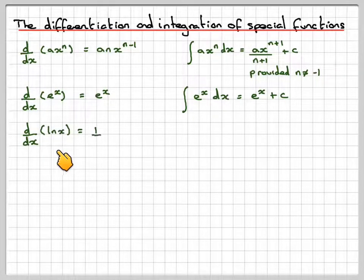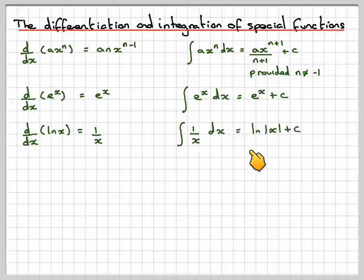d/dx of ln(x) is 1/x, and when you integrate 1/x, you get ln of the absolute value of x plus c. So the absolute value takes the case when x is actually negative.